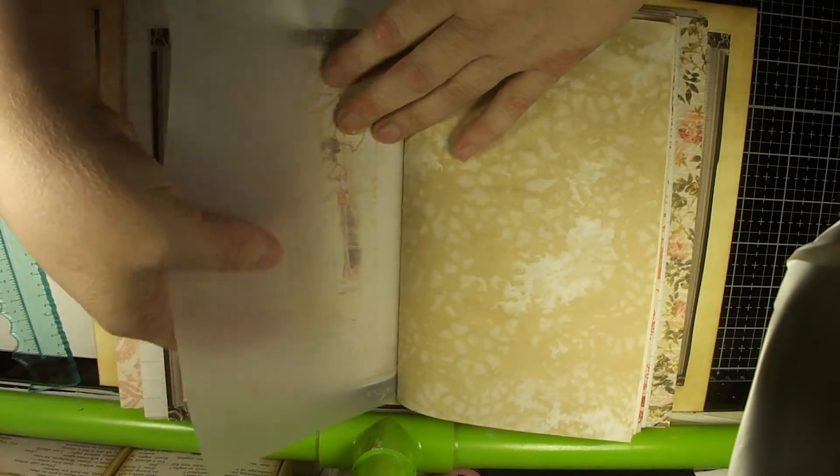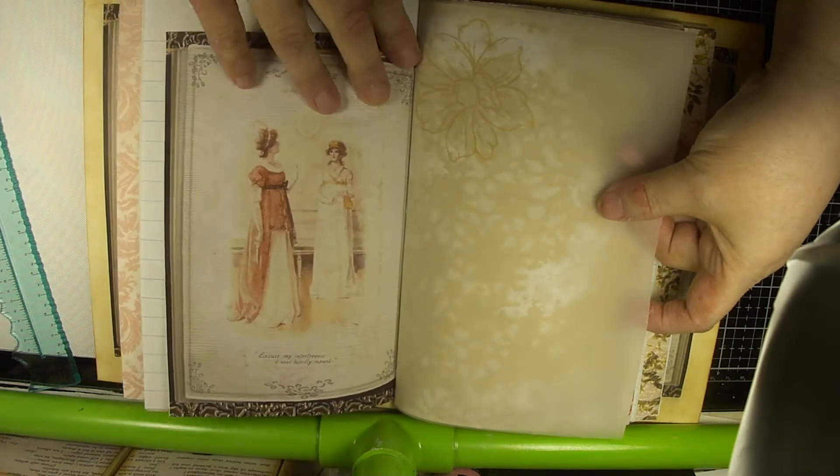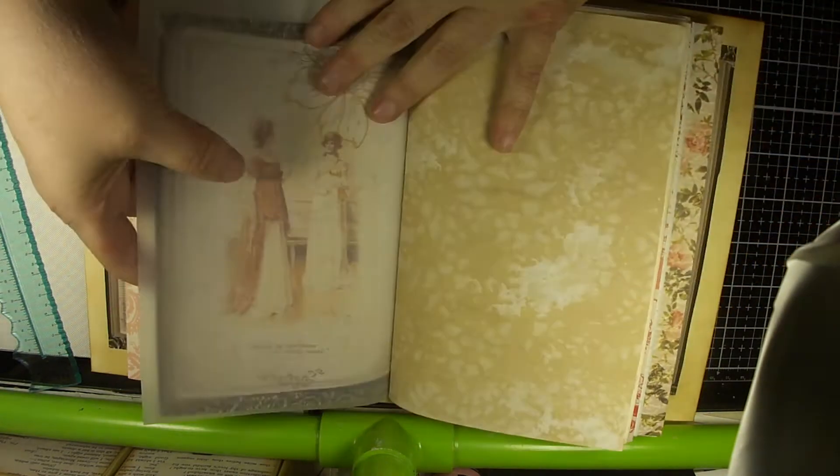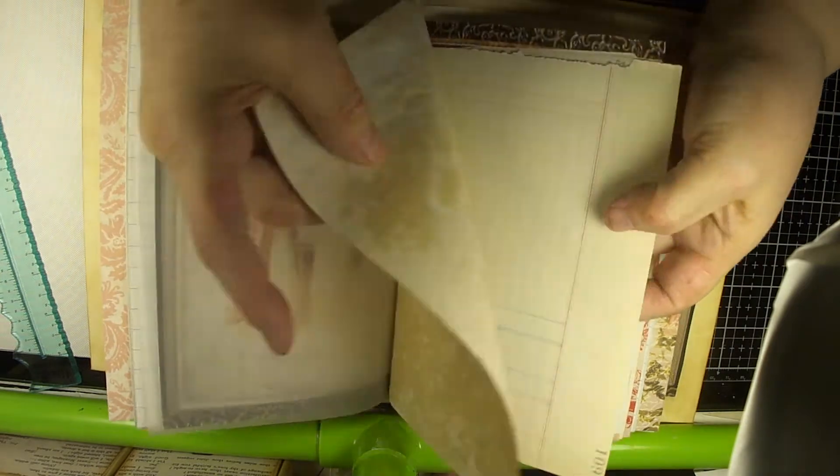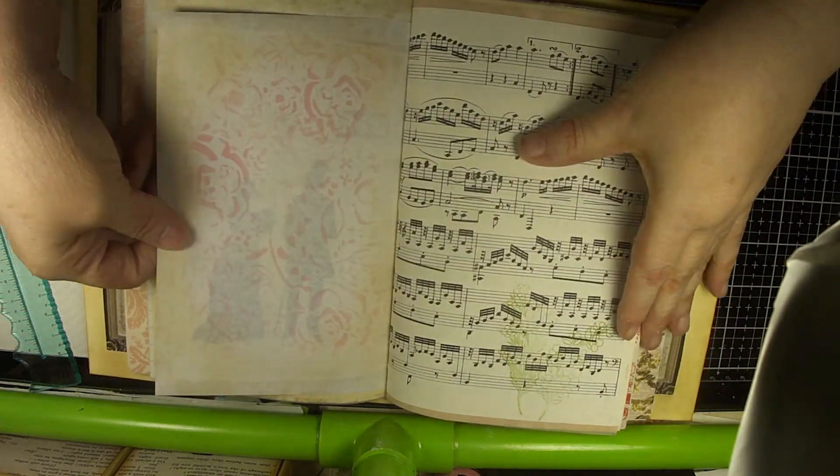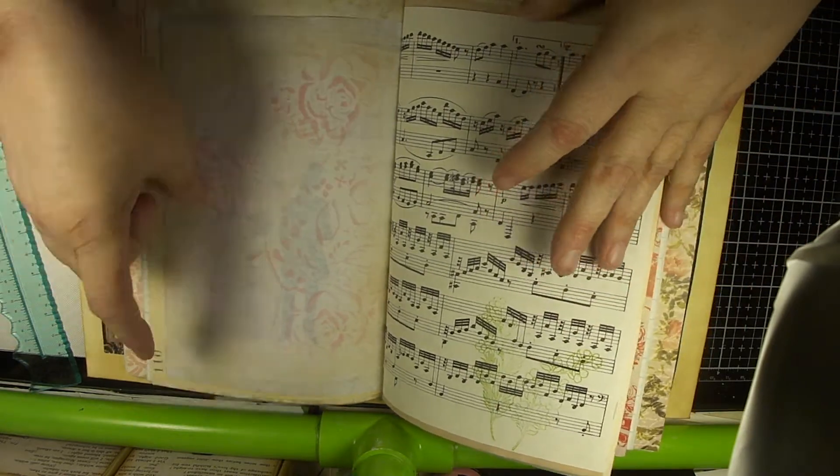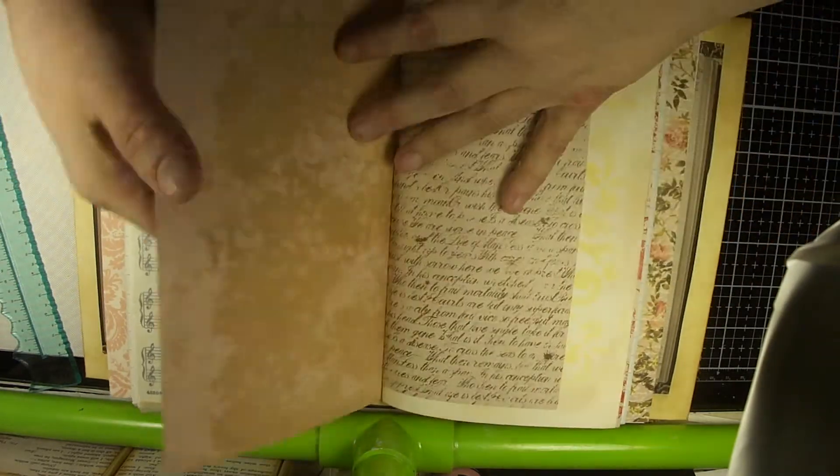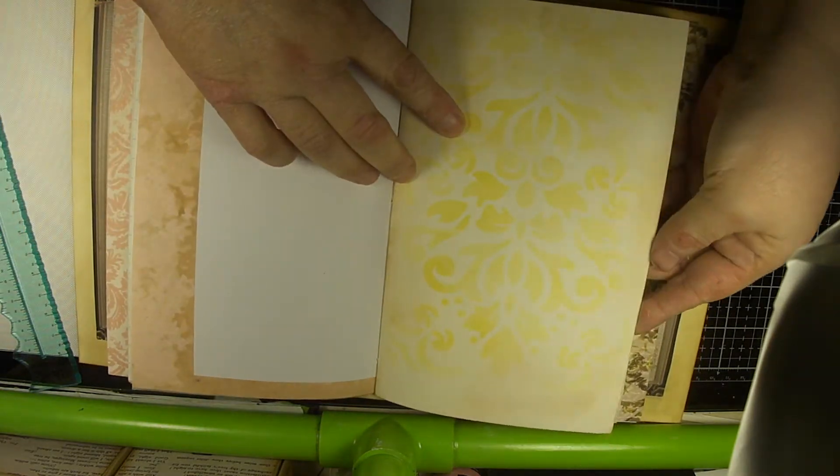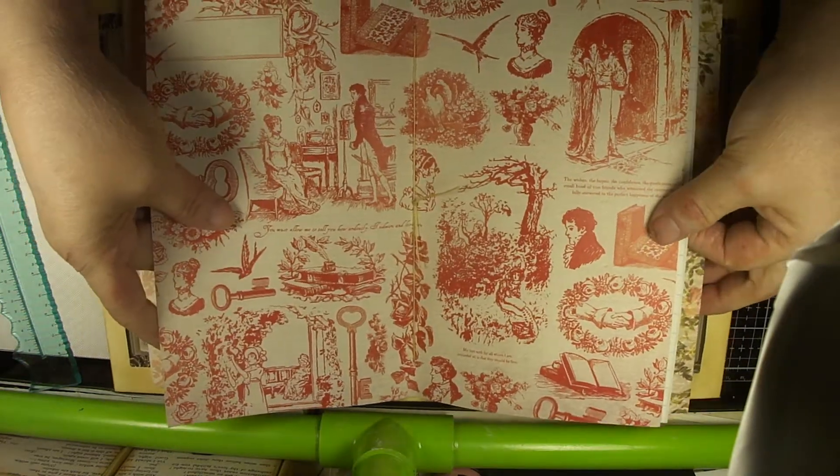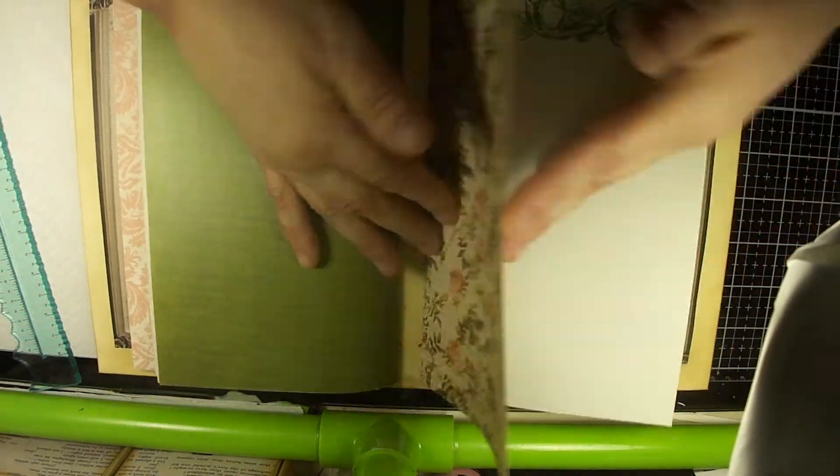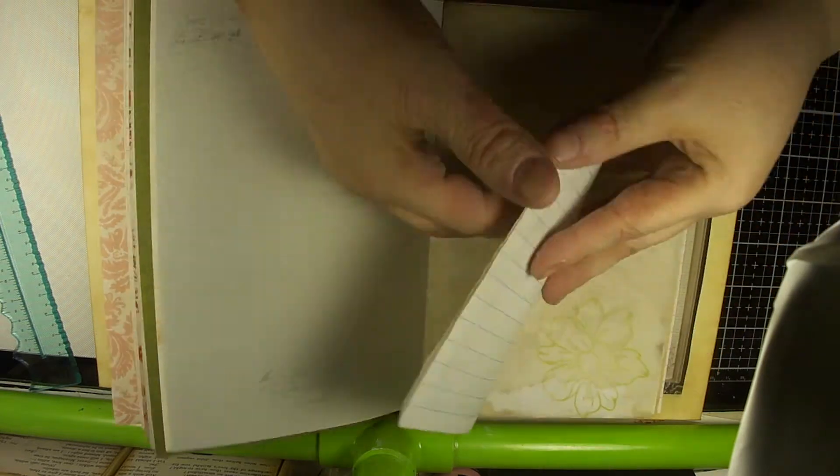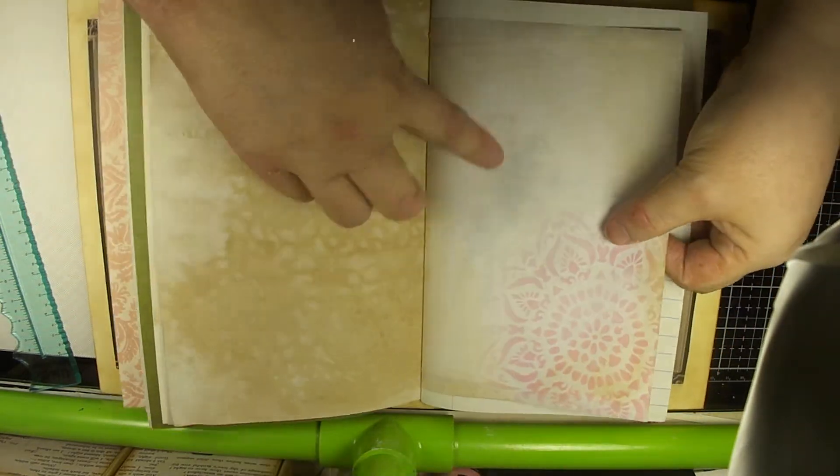So, I did use some stamping on this tissue paper. And I like how you can see it from either side. There's the stenciling I did there. And there's the stenciling I did on the back of that. And that's the center of that signature. And then, there we have stamping and stenciling.